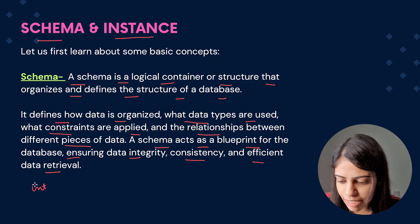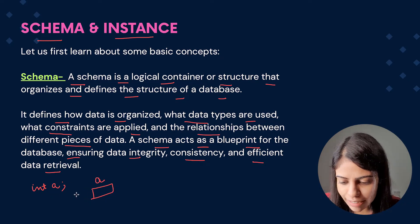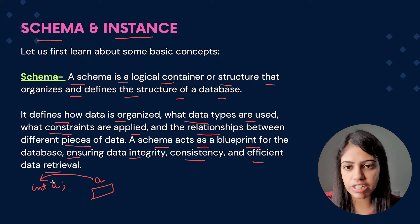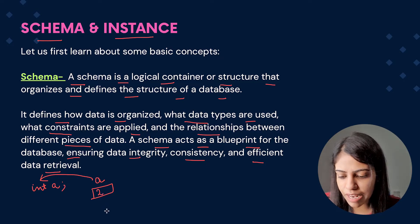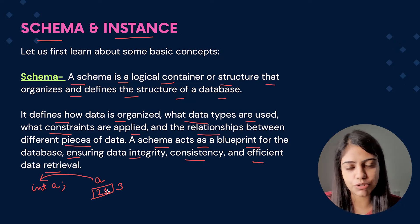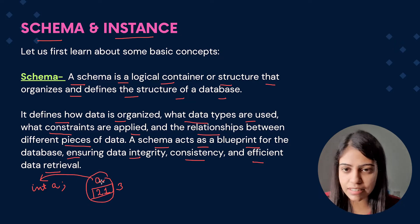Let's understand from an example. In programming terms we always write something like 'int a'. What does this mean? 'a' is a variable stored at a memory location and its data type is int, so we can only store integer type values in 'a'. Now in 'a' we can give the value as 2, 3, or 21 — any integer value — but 'a' remains at the same memory location.